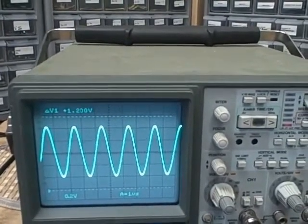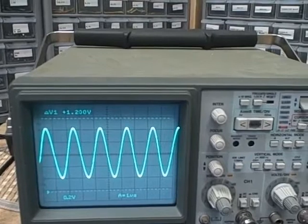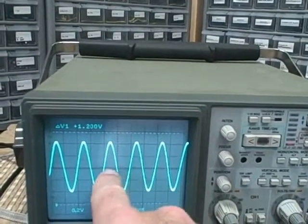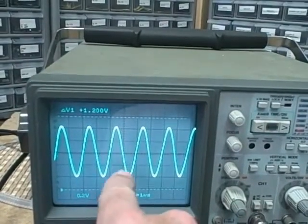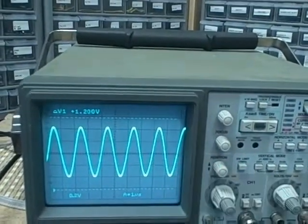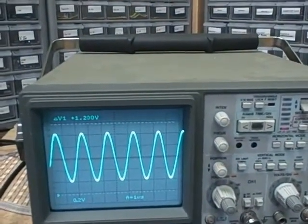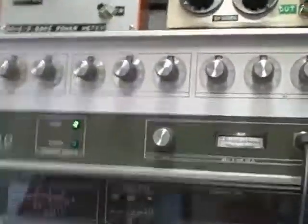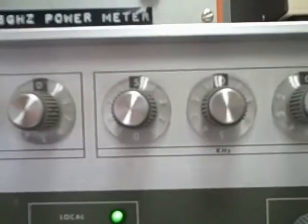Says that we are also running at one microsecond per division and if we trace out from the center of the scope here one full cycle we see that we cover two divisions so we must be running 500 kilohertz. And I am in fact running 500 kilohertz off of this PTS500.